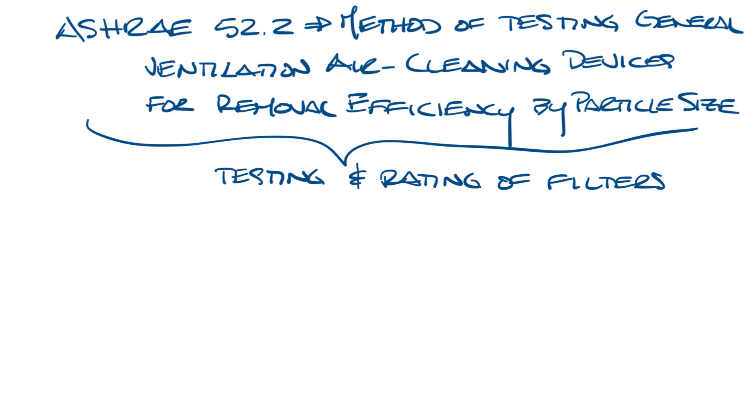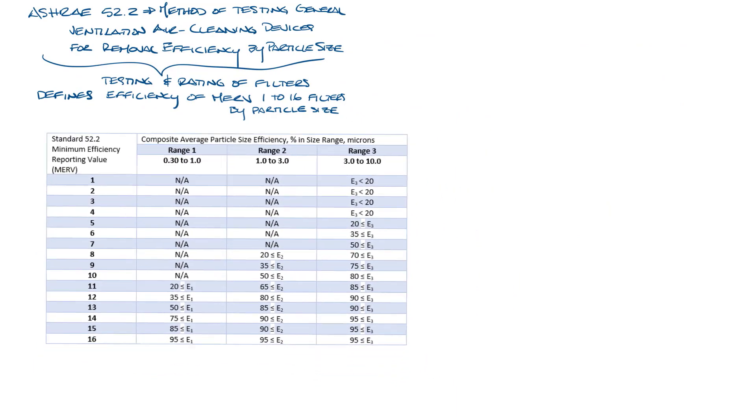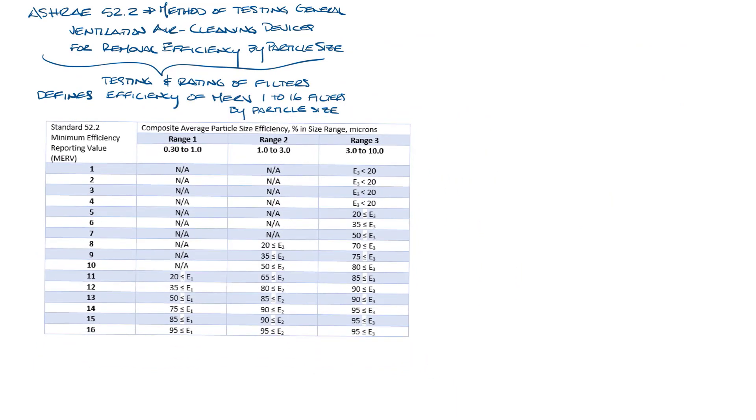ASHRAE recognized the need to provide a standard that would allow users to evaluate a filter based on the filter's ability to remove specific contaminants based on the contaminant's particle size, and that's where ASHRAE 52.2 came from. 52.2 defines the efficiency of MERV 1 through 16 filters by particle size. So let's move this out of the way and bring up the MERV table from the standard.